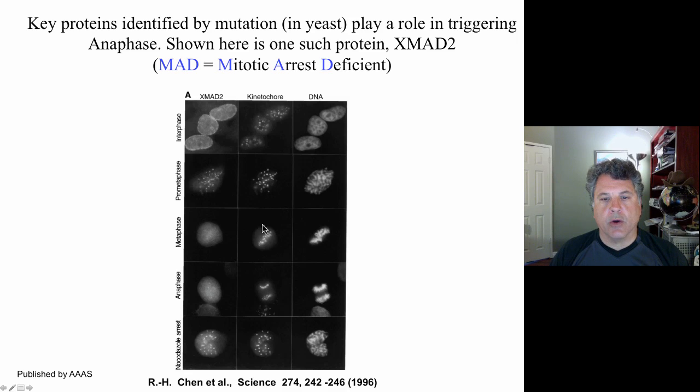So here we're looking at the kinetochores and you can see those progress through mitosis. And here's the DNA, you can see the chromosomes here being pulled apart. And if you stain in a normal cell for the MAD protein here, the XMAD protein we'll call it.